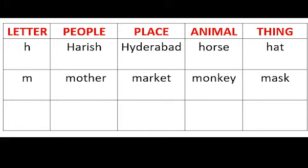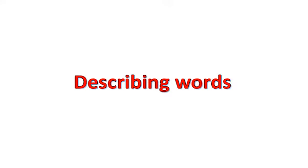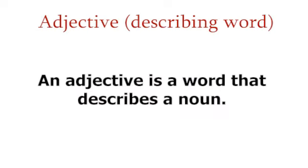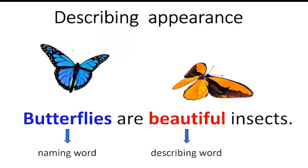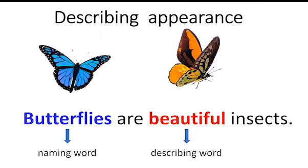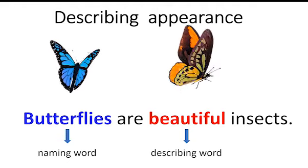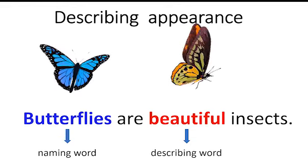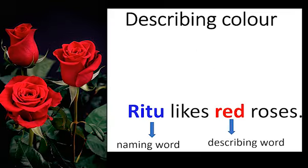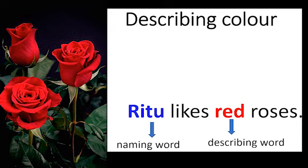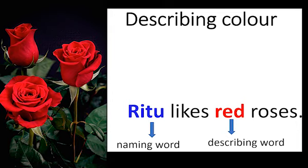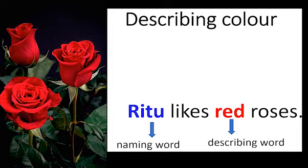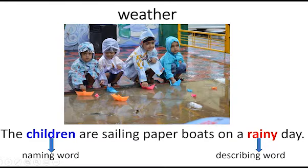Now let us learn about describing words, also called as adjectives. An adjective is a word that describes a noun. Let us see some examples. Butterflies are beautiful insects — here butterflies is the naming word and beautiful is the describing word describing the appearance of the insect. Ritu likes red roses — here Ritu is the naming word and red is the describing word, the color of the rose. The children are sailing paper boats on a rainy day — here children is the naming word and rainy is the describing word describing the weather.